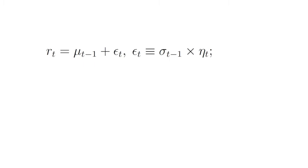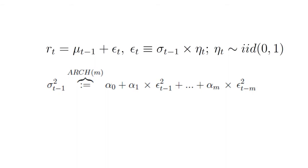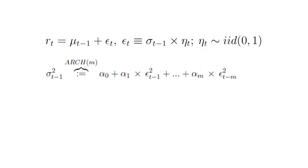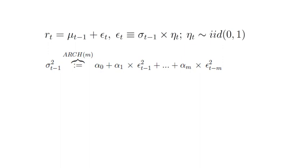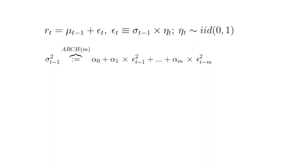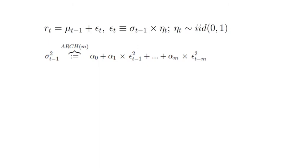So let's start with the basic return decomposition where the realized return in t is mu_{t-1} plus epsilon_t and the epsilon_t is just equivalent to sigma_{t-1} times eta_t. Eta_t is a white noise process. Mu_{t-1} is the conditional forecast of R_t, conditional on t-1 and epsilon_t is the forecast error. Now the ARCH(m) assumes that the conditional variance is a linear function in the past m return shocks. So here you see explicitly that sigma squared_{t-1} is defined to be alpha_0 plus alpha_1 times epsilon squared_{t-1} plus dot dot dot plus alpha_m times epsilon squared_{t-m}.